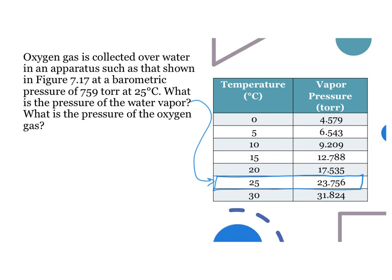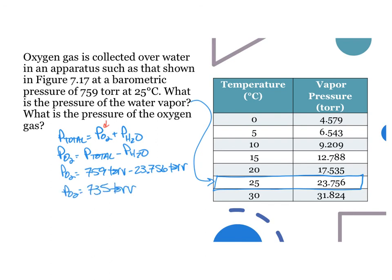Using Dalton's law, we can calculate the pressure of oxygen gas in the mixture. Partial pressure of O2 equals the total pressure minus the pressure of H2O equals 759 torr minus 23.756 torr equals 735 torr.